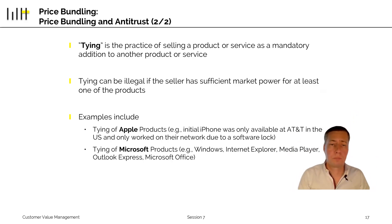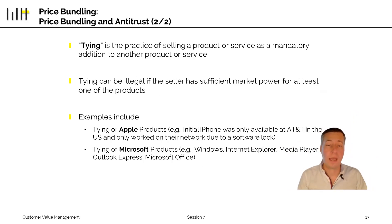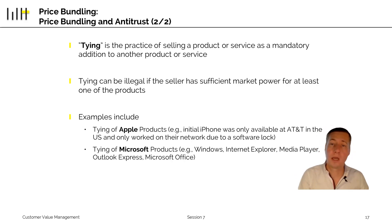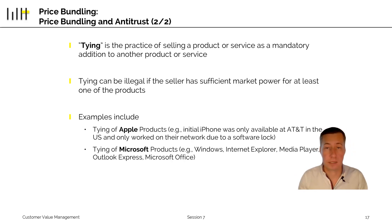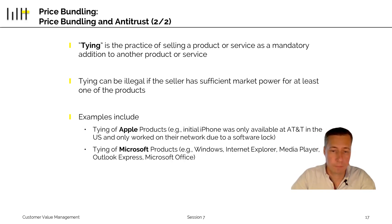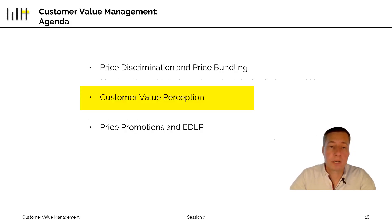There are many cases of bundling, or what is called tying — the practice of selling a product or service as a mandatory addition to another product — that can be illegal. Look at Apple, for example, who at the very beginning tied the first iPhone to a contract at AT&T. Or look at Microsoft, which tended to tie its operating system together with certain products like the internet browser. If you are interested in the relationship between price bundling and antitrust, there are lots of examples online, and antitrust lawsuits around pricing very often fall into this specific category. Now we move on and talk about customer value perception.